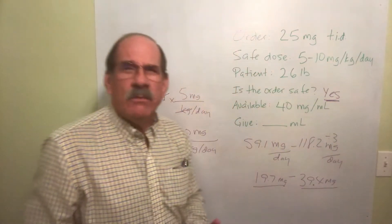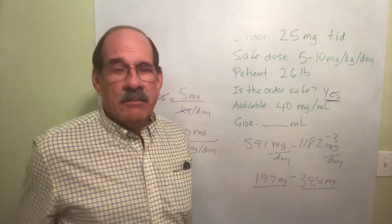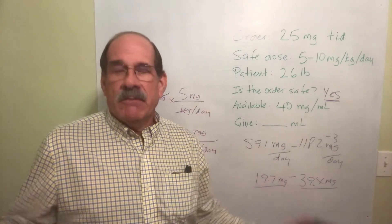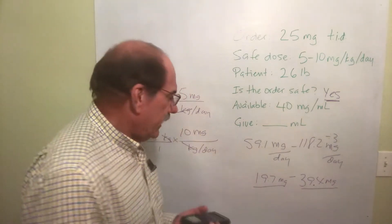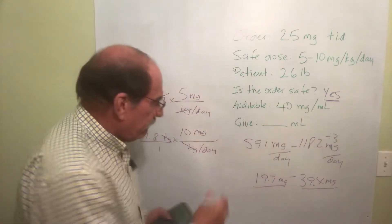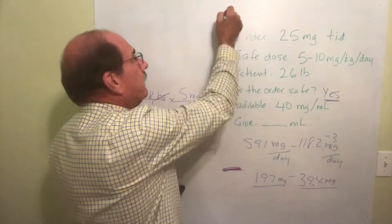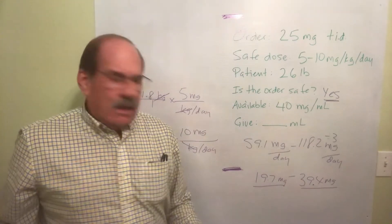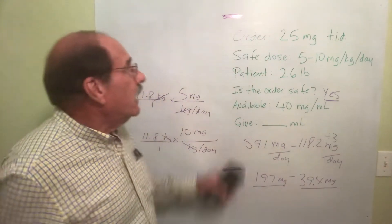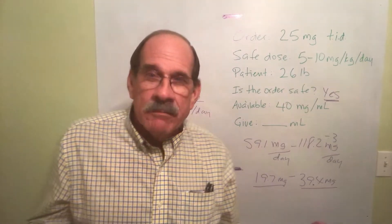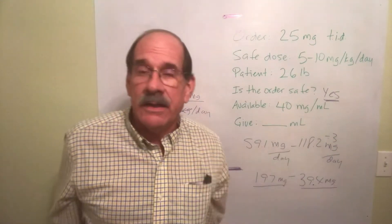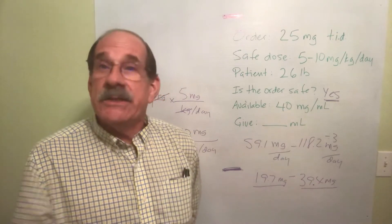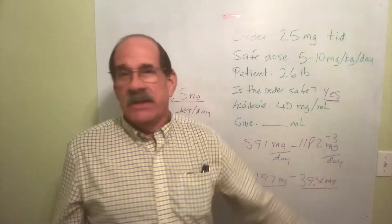Think of it like a carnival or amusement park ride. There's a minimum height line — if you're under it, you can't ride; you're too short. There's also a maximum height line — if you're taller than that, you can't ride either. But if you're within that range of heights, you can ride. Same principle here: if the order is lower than the minimum, it's not safe. If it's higher than the maximum, it's not safe. Only if it's in the range is it safe.